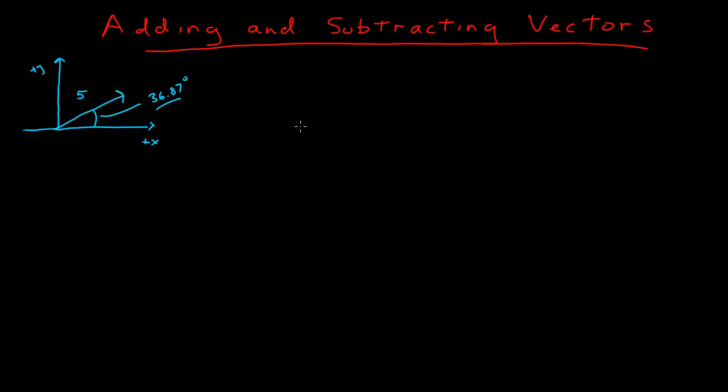But it doesn't really matter at this point. There's our vector, it's 5, pointing in that direction. Now if I want to look at another vector, and I want to put a coordinate system where the origin is at the tail of the vector, have a positive x and a positive y-axis. Now let's say this vector has a length 7.